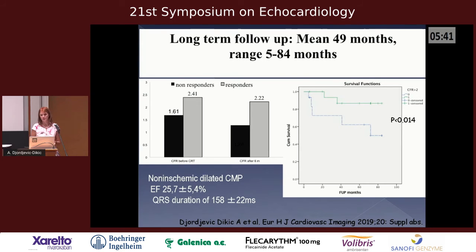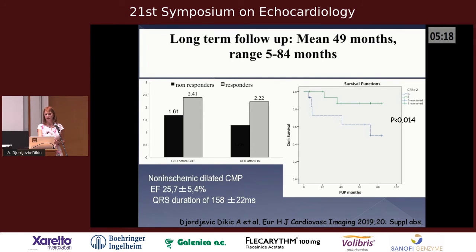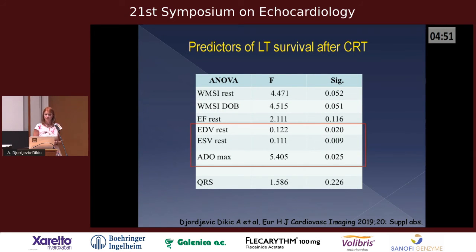We then performed long-term follow-up at around 49 months on the same patient cohort. Non-responders — shown in black — had low coronary flow reserve before CRT and also lower coronary flow reserve six months after CRT compared to responders, and they also had worse long-term prognosis. The predictors calculated were end-diastolic volume at rest, end-systolic volume at rest, and coronary flow reserve at adenosine maximum hyperemia.